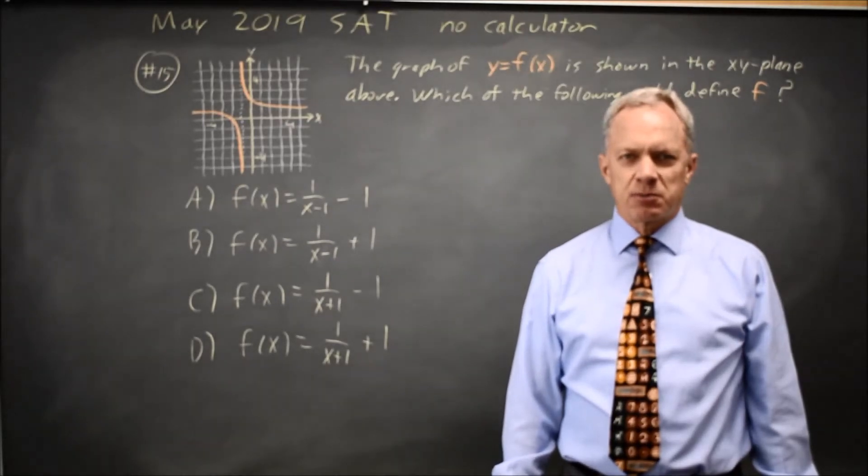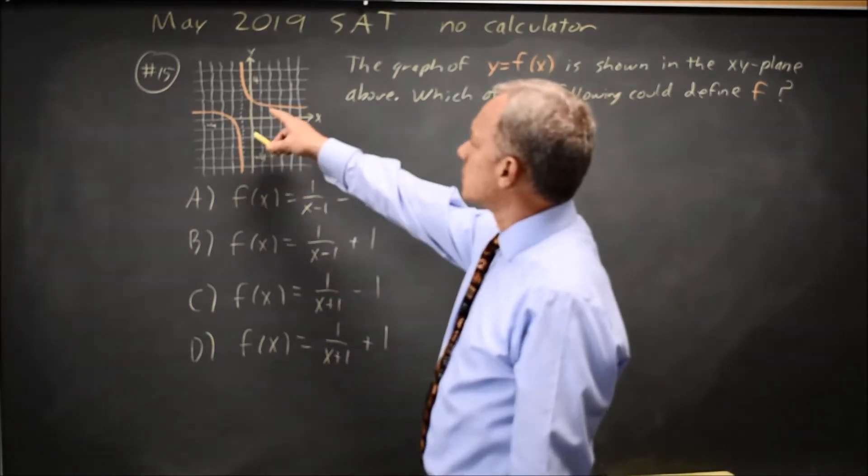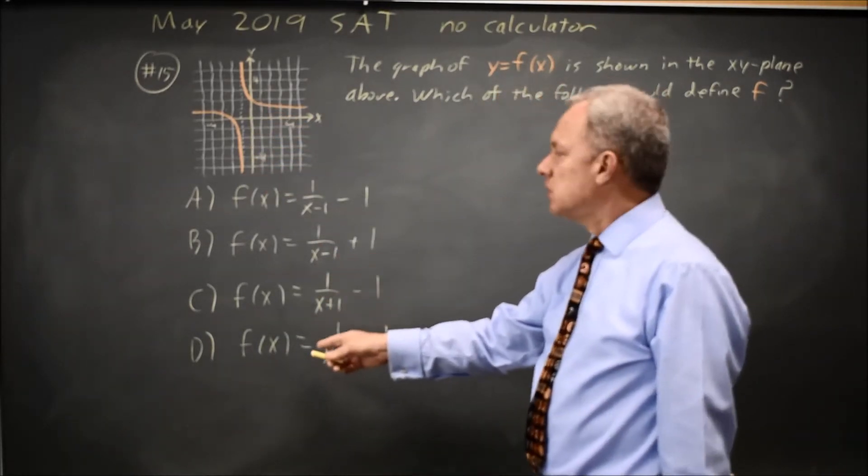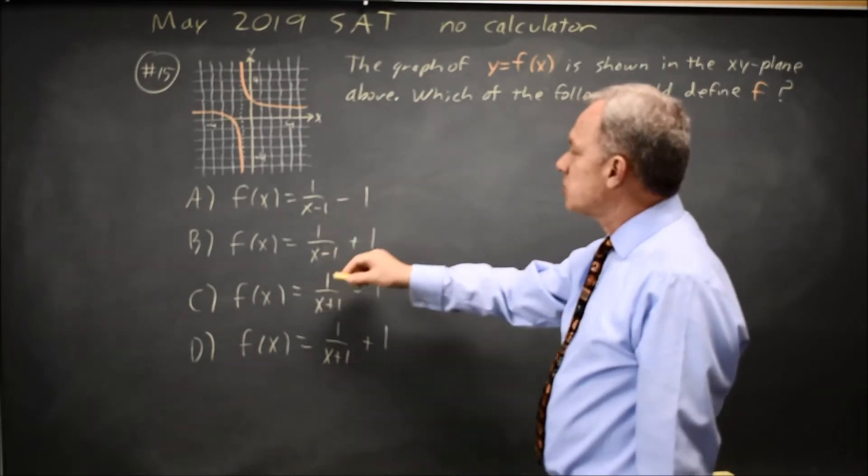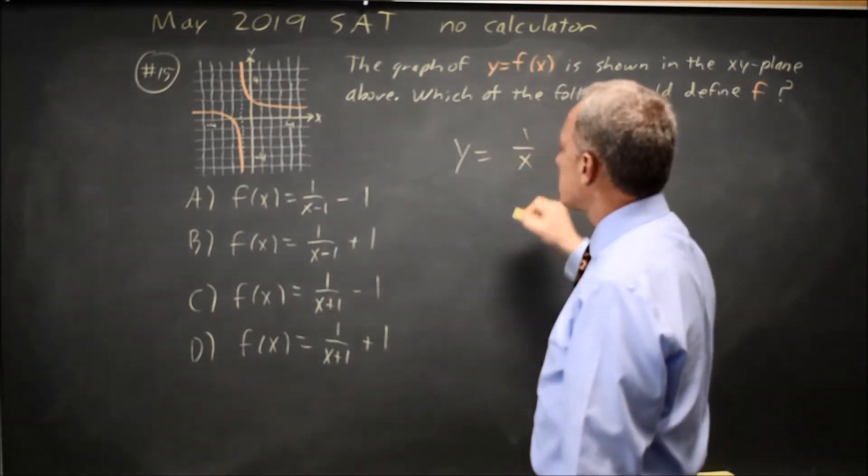This is non-calculator question number 15 from the May 2019 SAT. College Board gives us a graph of a function and asks which could be the equation. If you look at the answer choices, they look like translations of y equals 1 over x.